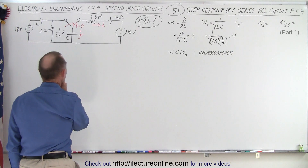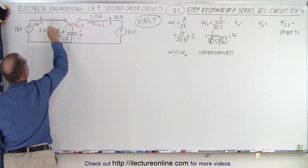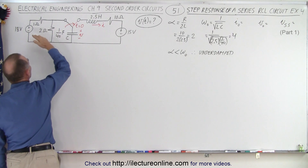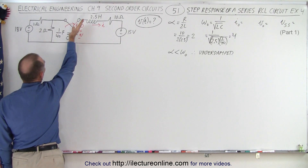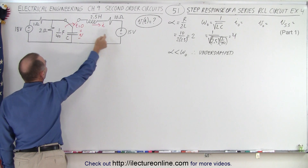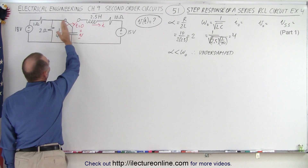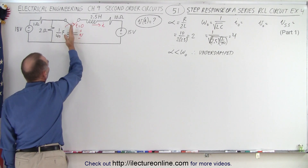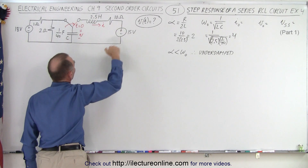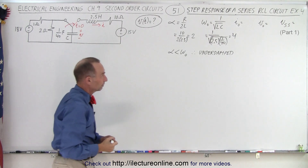How about the initial current I₀? There is current flowing through the circuit before the switch changes. The moment we change the switch, there's no current going to the capacitor, and since the new circuit is now connected to the capacitor, it starts out with zero current through the circuit.